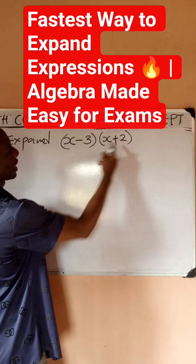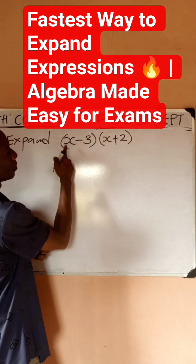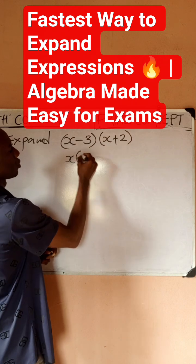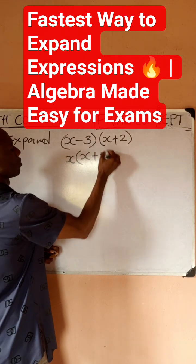So if you have something like this, you want to expand this, you pick the first variable here, which is x. Then you pair it up with the bracket plus 2.